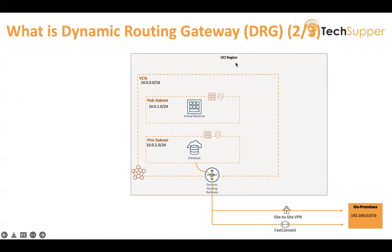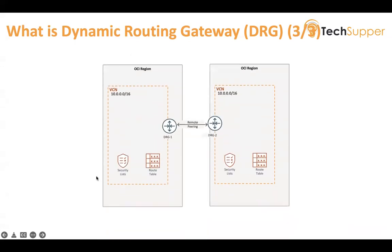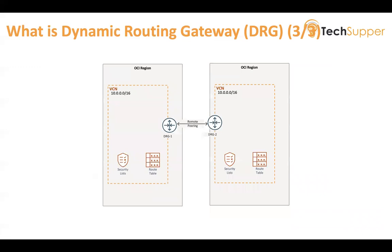For example, we have a public subnet, a private subnet, and an on-prem application. If your database wants to communicate with an on-prem application, we will use the Dynamic Routing Gateway via site-to-site VPN or FastConnect. In the routing table, the destination CIDR is your on-prem CIDR — for example 192.168.0.0/16 — and the route target will be your Dynamic Routing Gateway. DRG can also be used to communicate between two VCNs in two different regions.